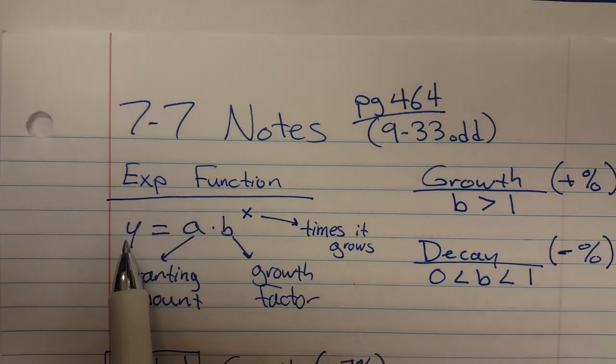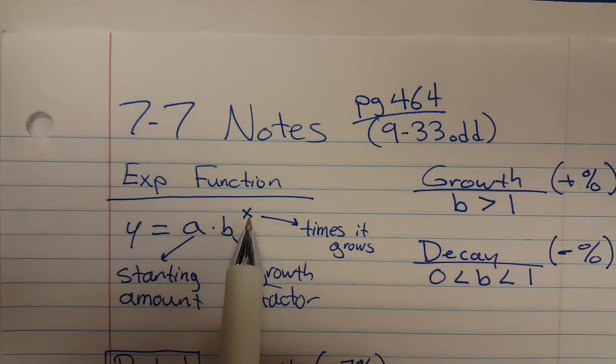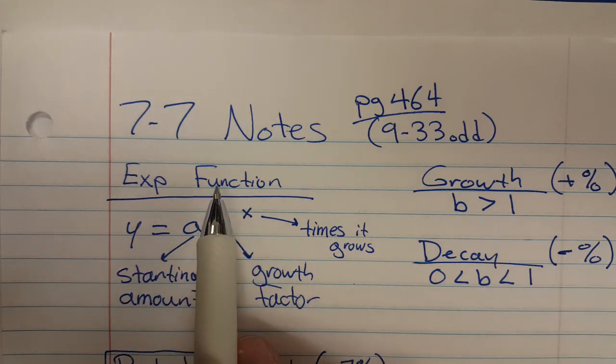So an exponential function, it's basically built like this. You have y equals a times b to the x. There's an exponent in it. That's why it's an exponential function.